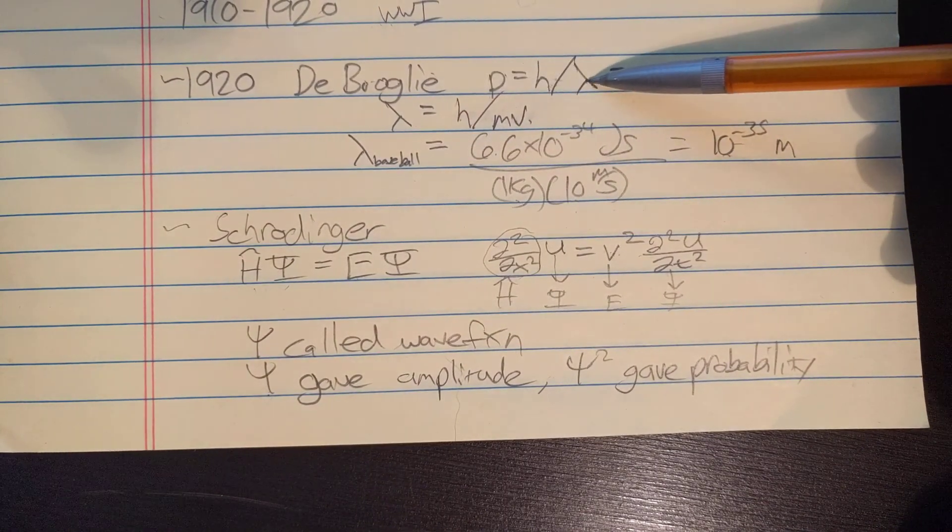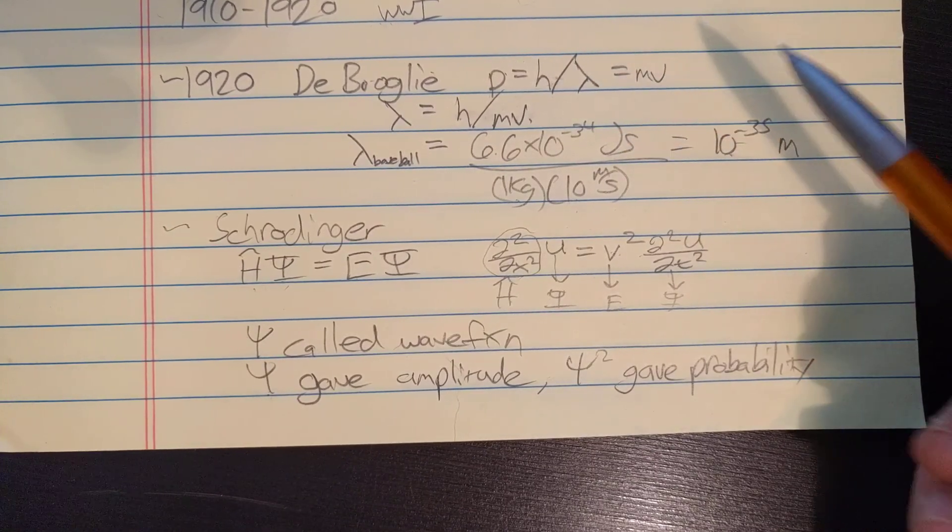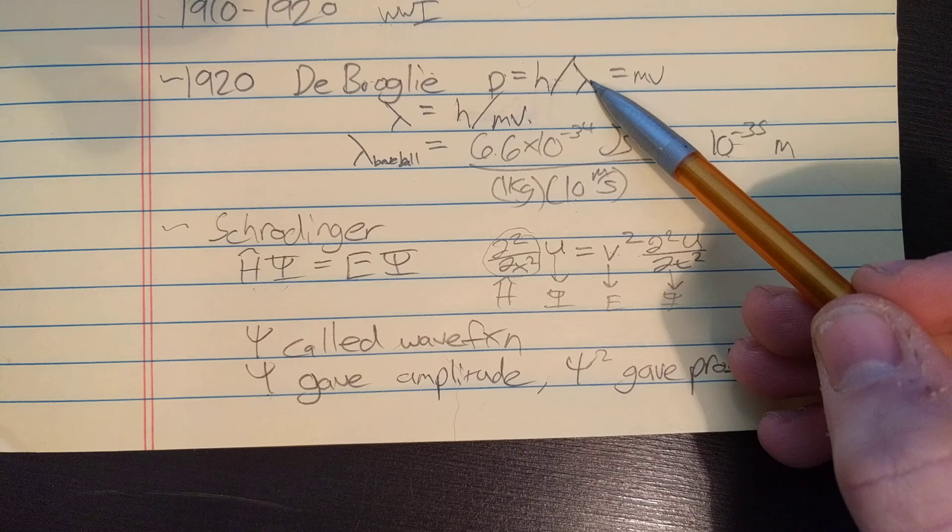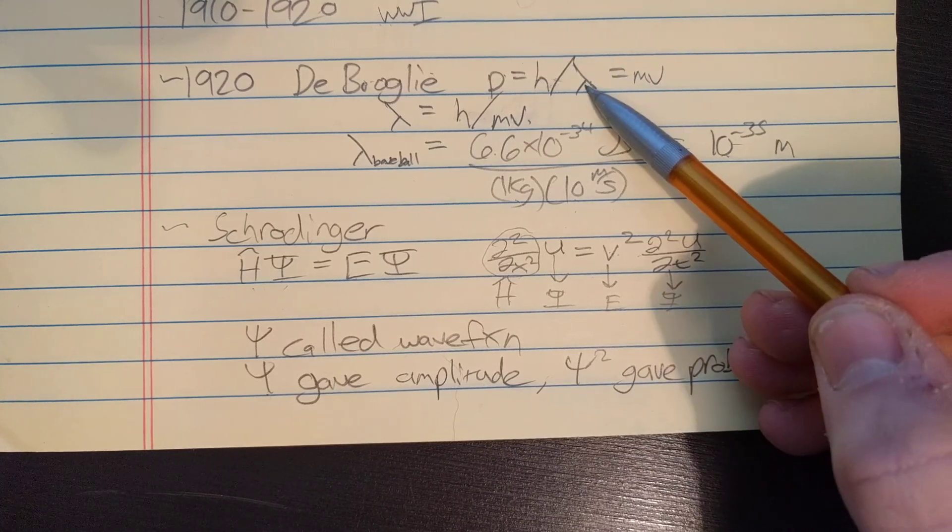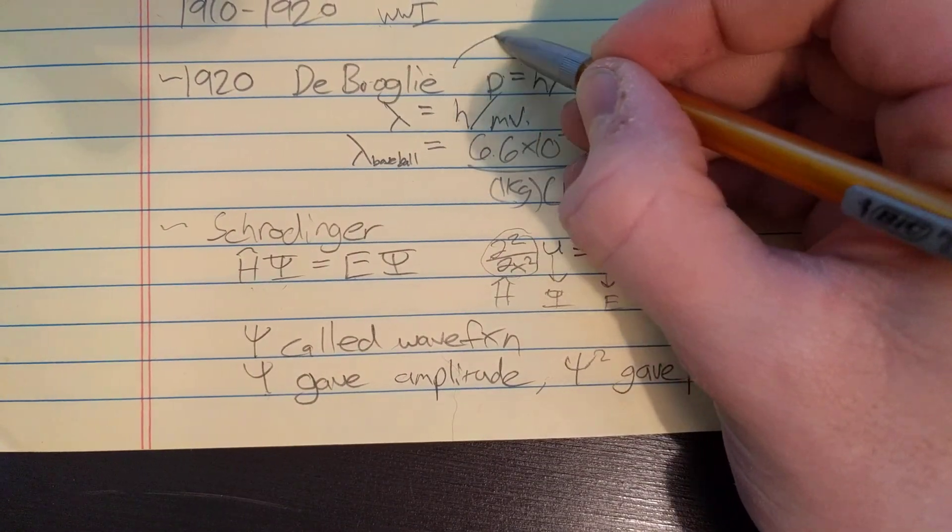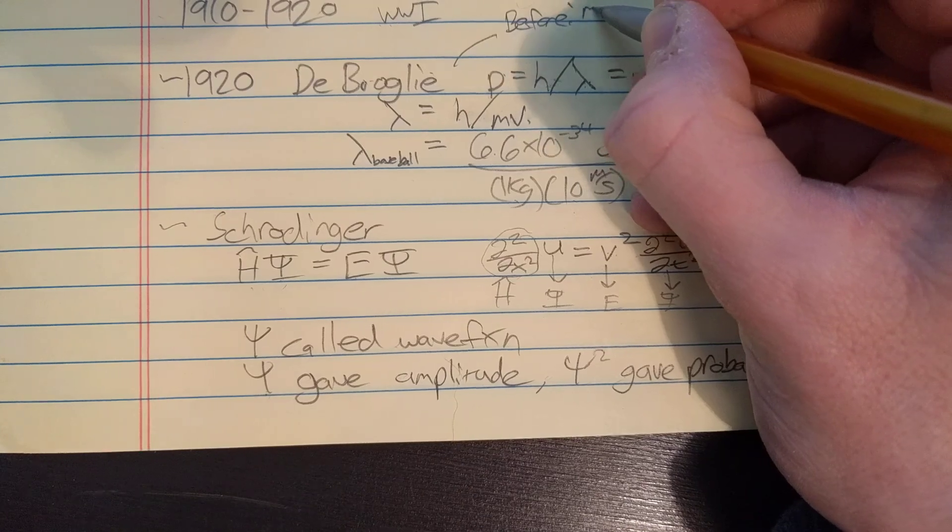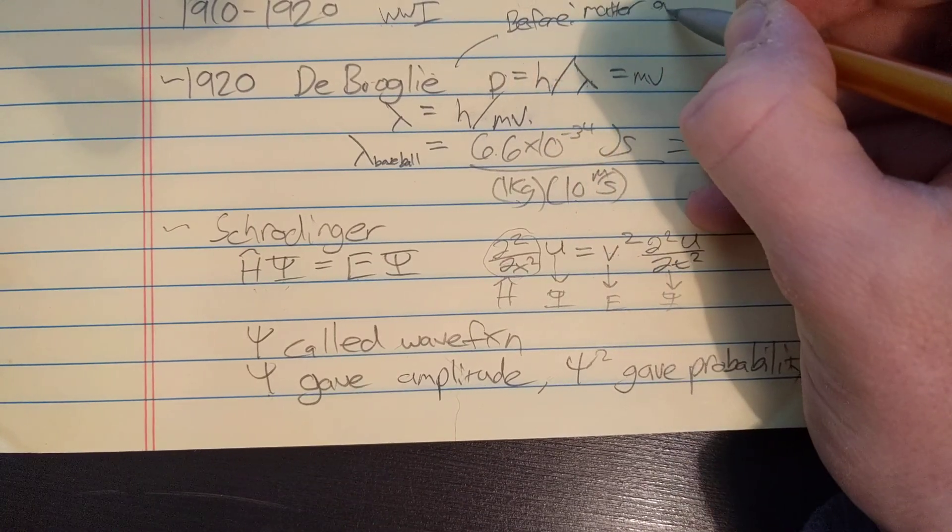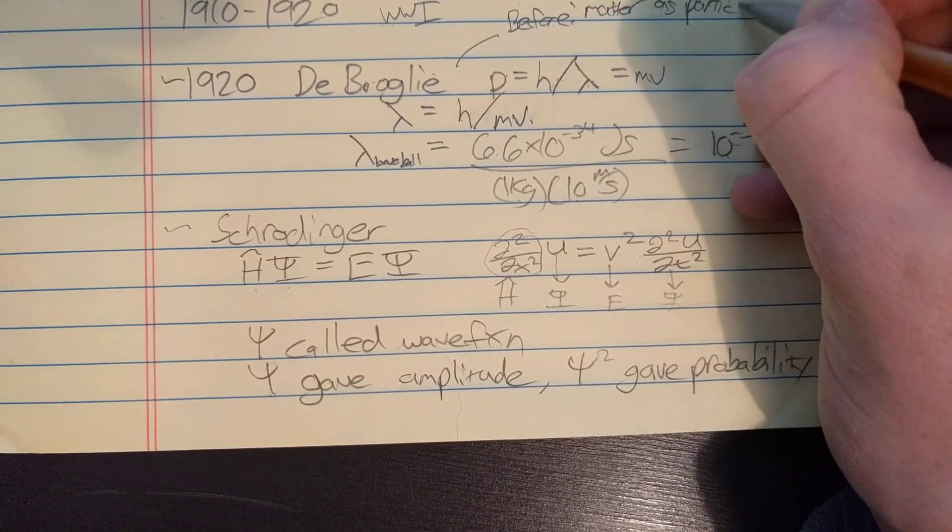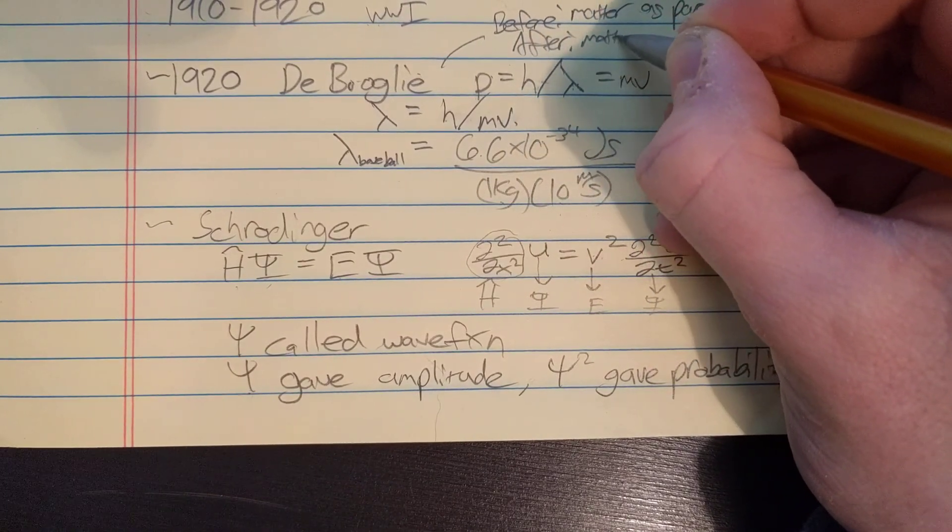Louis de Broglie came along and gave us that everything has, everything including matter, also comes as waves. Before him, matter was thought of as particles. After him, matter was thought of as waves. So kind of the exact opposite thing to light.